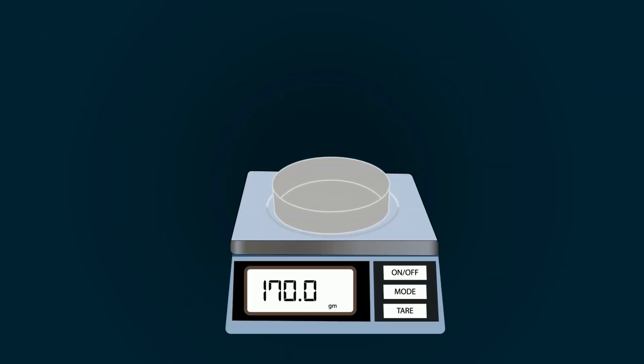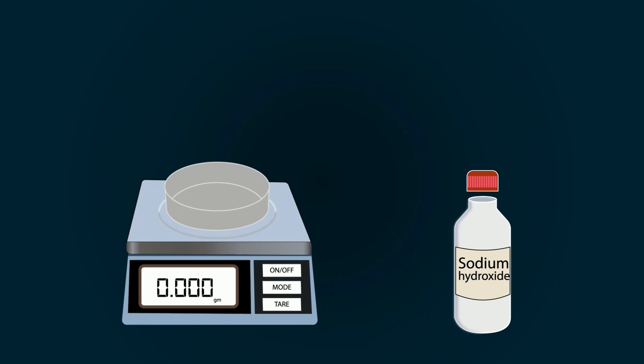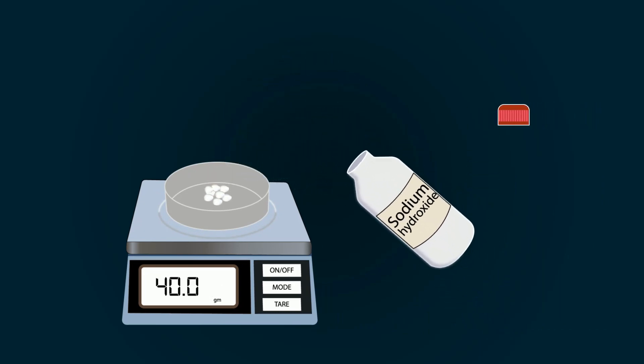First of all, have a petri dish on weight balance and tare it. Now, start putting sodium hydroxide into the petri dish and weigh it as 40 grams.